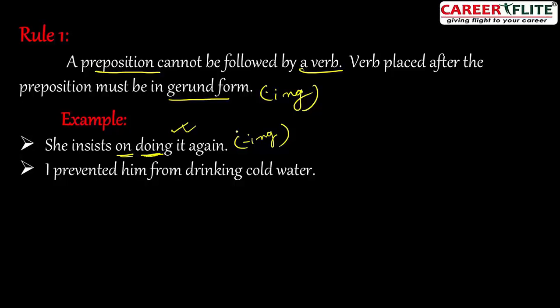Another example: 'I prevented him from drinking cold water.' Here, after the preposition 'from', we are using 'drinking' — the verb in gerund (-ing) form. That is why we can place a verb after the preposition, because it is in gerund form.